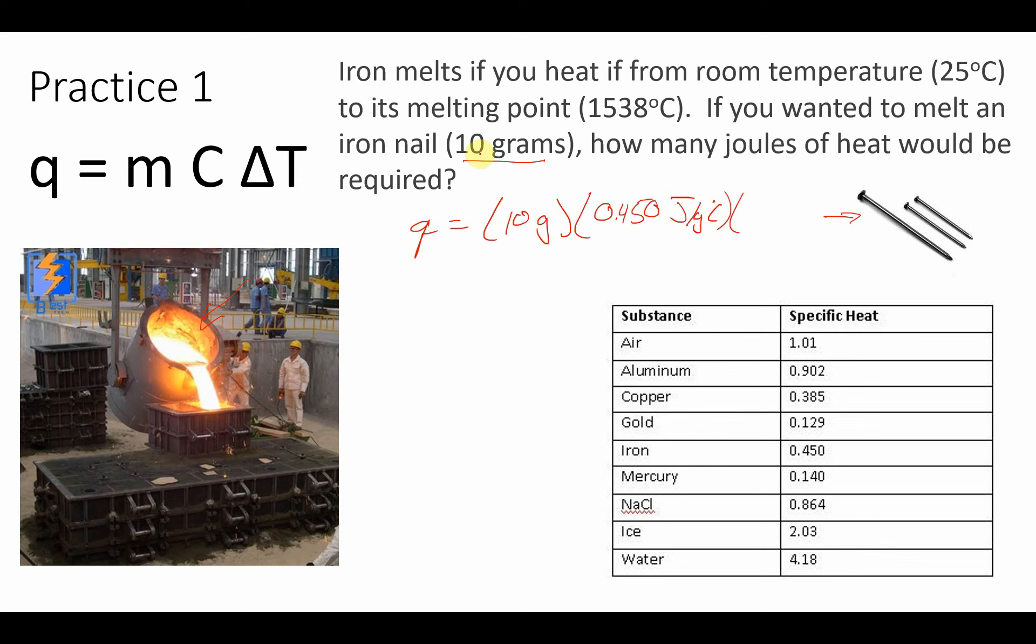All right, so I said we had 10 grams of material, that's M, C is not 4.184 because it's not water, it's iron, so I came down here and used 0.450 joules per gram degree Celsius.